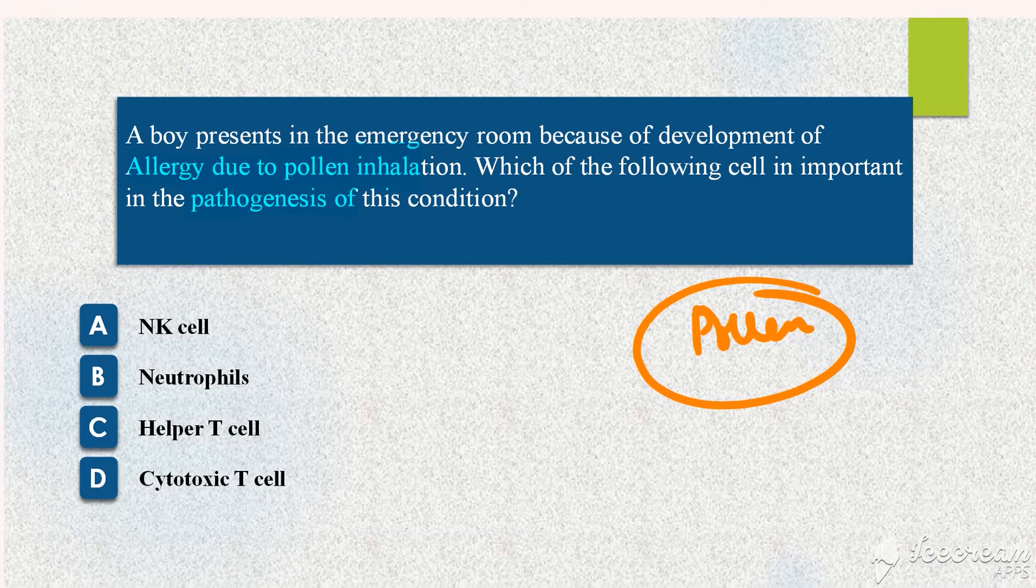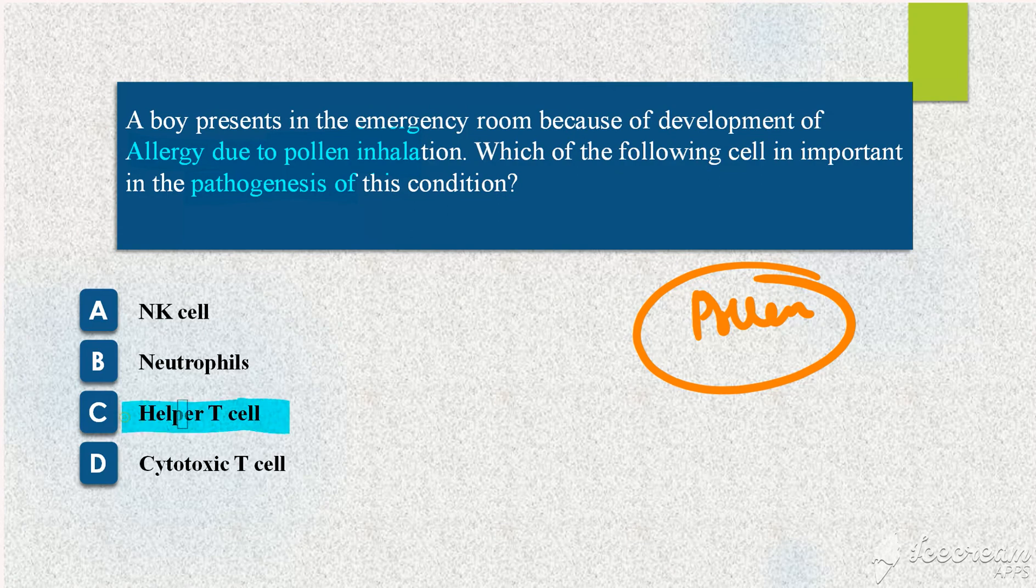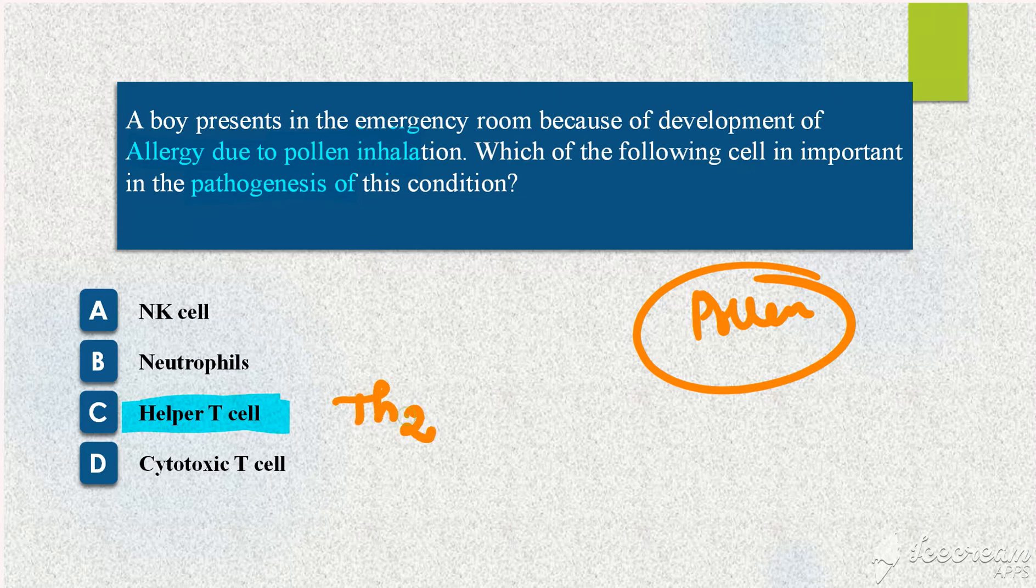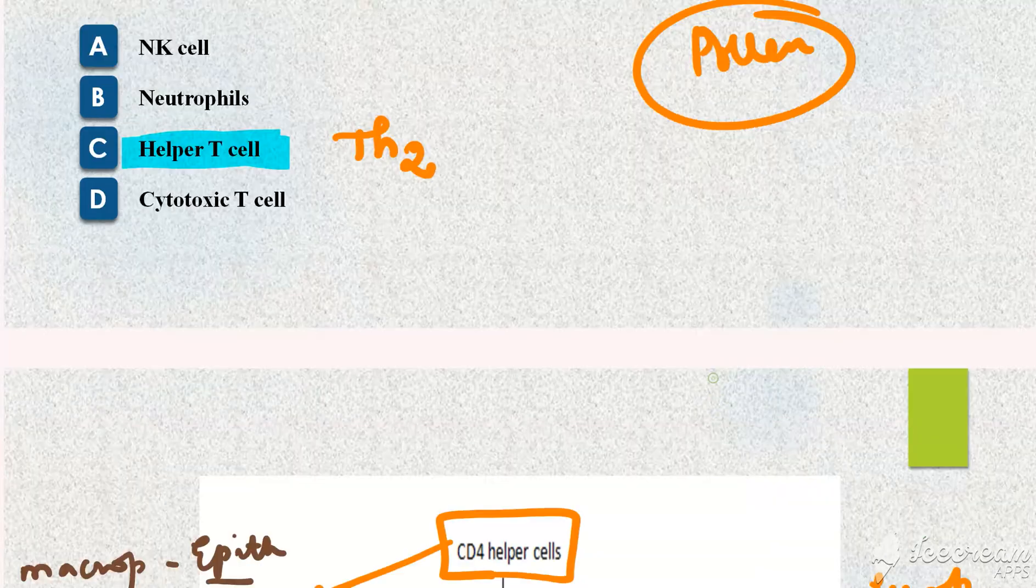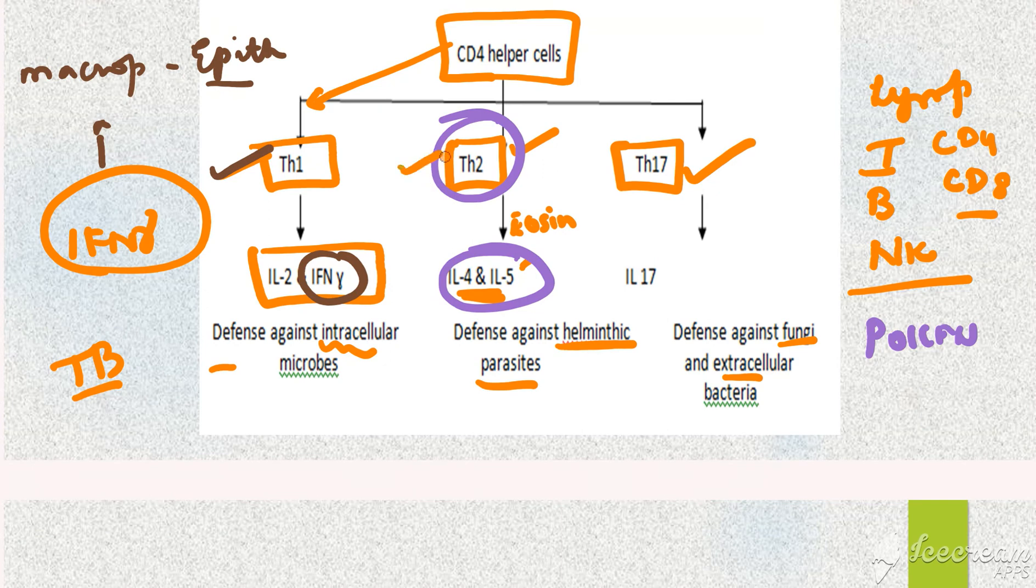Let's go back to the question. What's the answer? The answer here is helper T cell, and to be specific it is T helper 2 cell which gets activated.